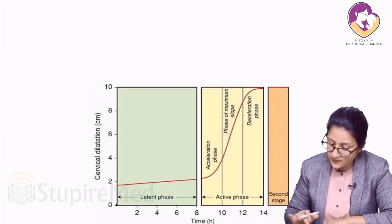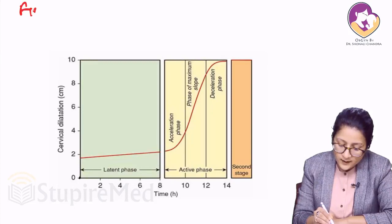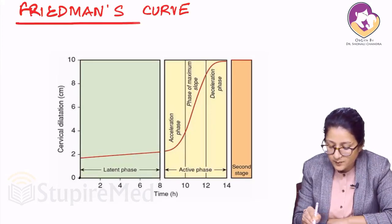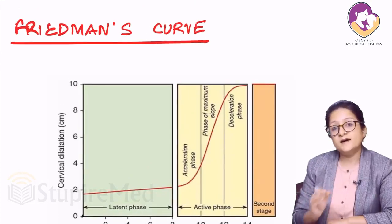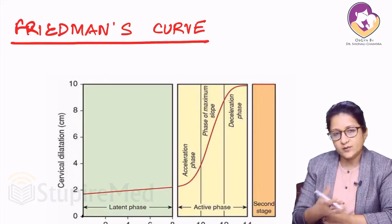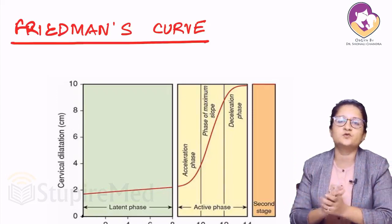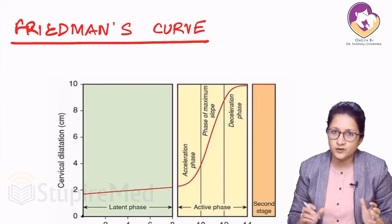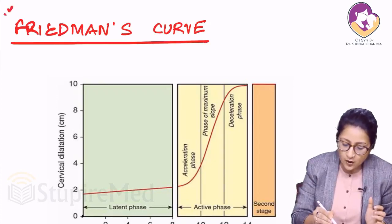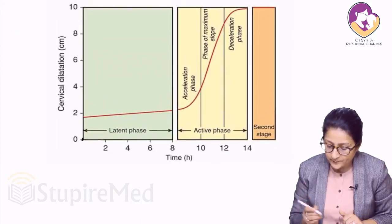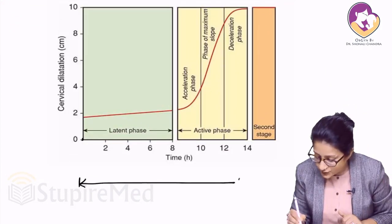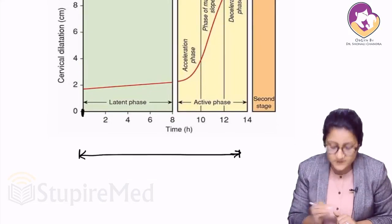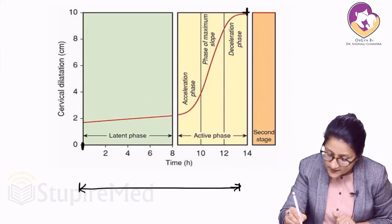Talking about the Friedman's curve first. Friedman studied a number of primigravida women who were low risk, with singleton pregnancies at term, who entered into labor and then delivered normally vaginally. He tabulated the results, made a graph, and said this is how most women are going to progress in labor. According to Friedman, the first stage of labor is from onset of uterine contractions to full dilatation of the cervix — that is, from zero to 10 centimeters.